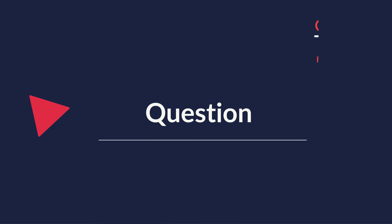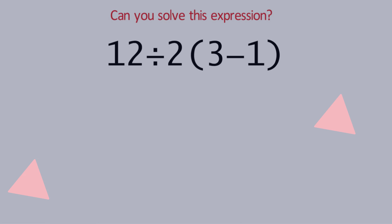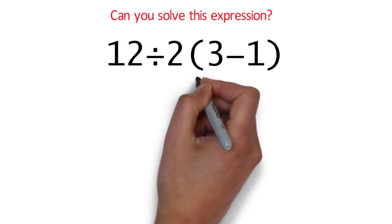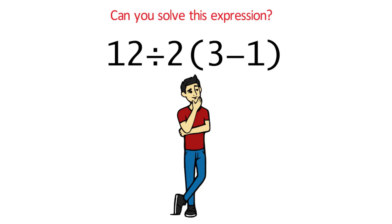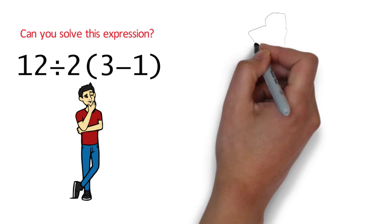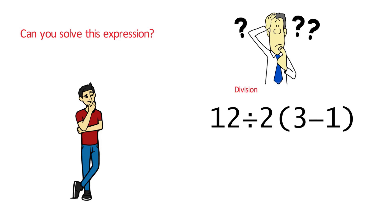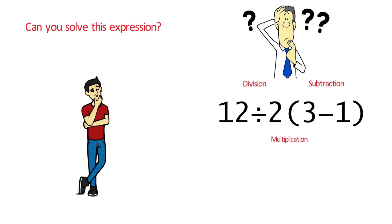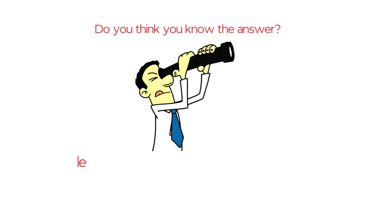Here's an interesting question which is easy to understand, but at the same time you will have a lot of fun solving it. You need to calculate the simple expression: 12 divided by 2, and then multiplied by the value in parentheses, which is 3 minus 1. Take a look closely and see if you can come up with the answer. There are three operations here: division, multiplication, and subtraction. All you need to determine is which one to do first, second, and third. Let's continue and get it solved together.